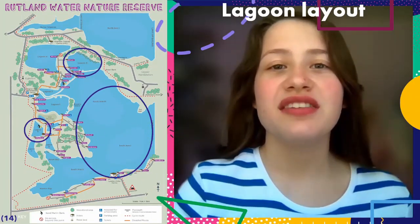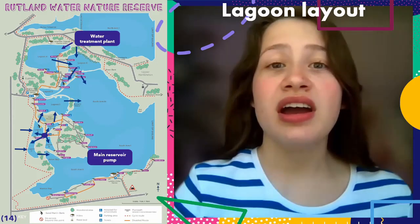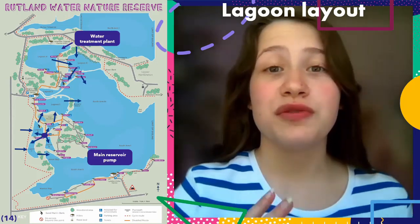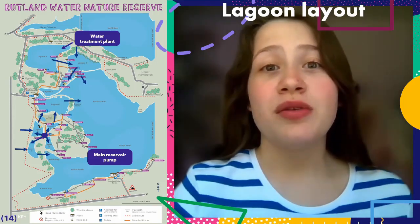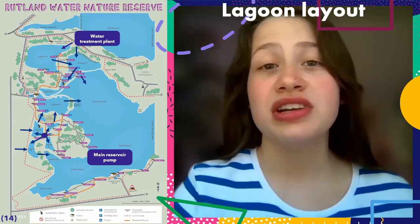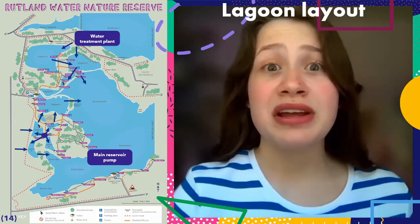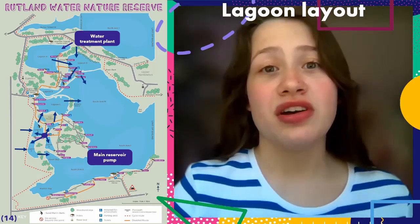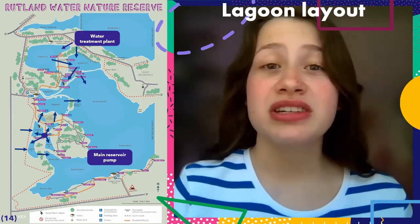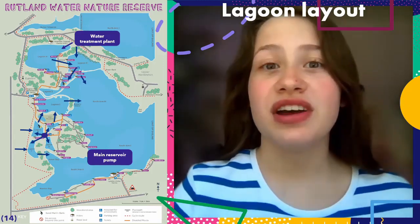In this study, Lagoons 3, 5, and the main reservoir were sampled for Corixidae. Looking at the map of Rutland, the arrows signify the movement of water, and you can see where the water treatment plant and the main reservoir pump are. Lagoon 3 receives its water mainly from the water treatment plant and often receives sewage discharges, making it more polluted. Lagoon 5 was created along with Lagoons 6, 7, and 8 — it mainly receives water from rainfall and the main reservoir but can experience agricultural runoff. The main reservoir receives its water from the River Nene and the River Welland. These sample sites were chosen as both sewage and agricultural runoff have been shown to have adverse effects on the environment.